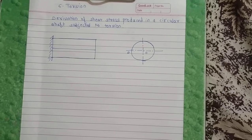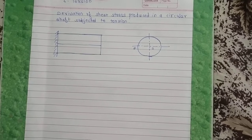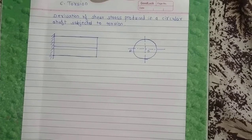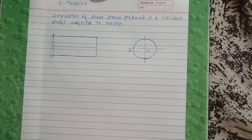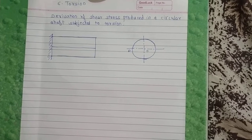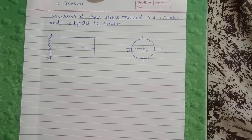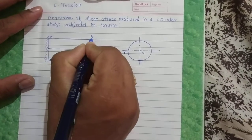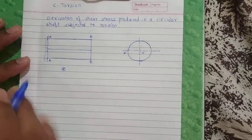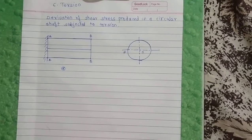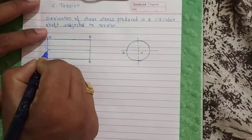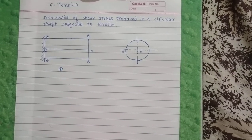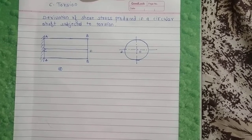Today we are going to discuss the derivation of shear stress produced in a circular shaft subjected to torsion. When a circular shaft is subjected to torsion, shear stresses are set up in the material of the shaft. To determine the magnitude of shear stress at any point on the shaft, consider that the shaft is fixed at one end A and free at the other end B, as shown in the figure. CD is any line on the outer surface of the shaft. The shaft is subjected to torque T at end B.